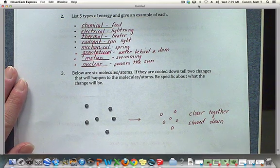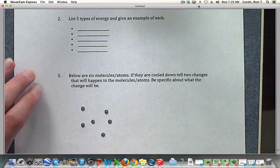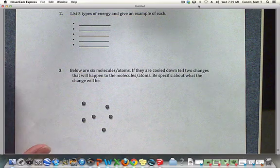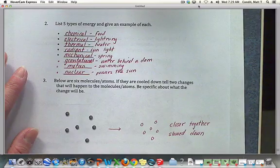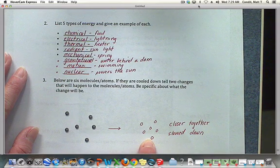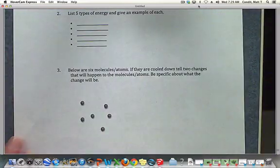Number three: below are six molecules or atoms. If they're cooled down, tell two changes that will happen to the molecules or atoms. Be specific about what the change will be. If we cooled those atoms down, we know that our model is going to show that our molecules are going to get closer together and they're going to slow down.